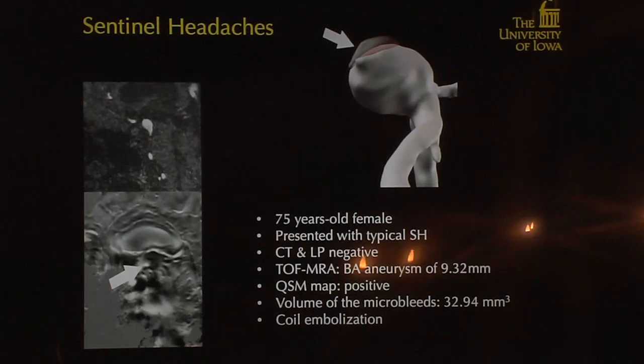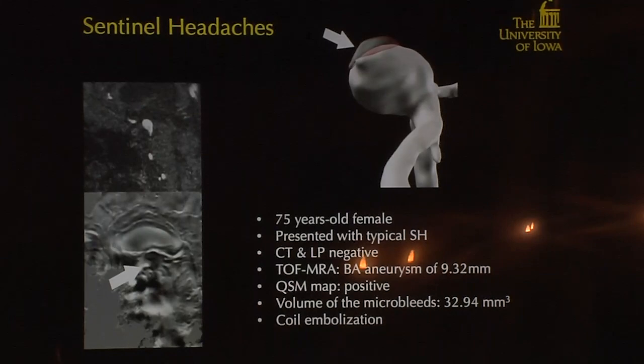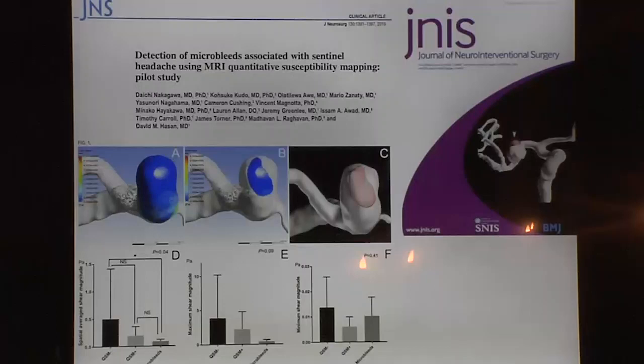We found QSM very useful and applied it to sentinel headaches. A 75-year-old female presented with a typical sentinel headache — CT negative, LP negative, worst headache of her life — and an aneurysm was found. During the QSM protocol, we confirmed she had a small micro-hemorrhage. Our collaborator Daicho Nakagawa from Japan measured the volume of these micro-hemorrhages. This was published in the Journal of Neurosurgery.